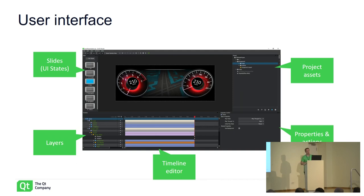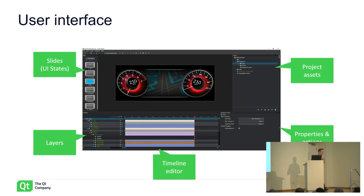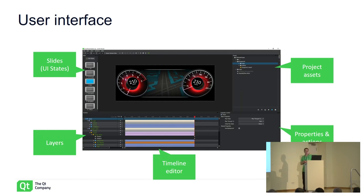On the right-hand side, you have the project assets — basically everything in the project: 3D assets, 3D models, textures used on 3D objects, and post-processing effects. There are also properties and actions. Properties include things like the location of an object, X coordinates, opacity, or the color of a material applied to the object.